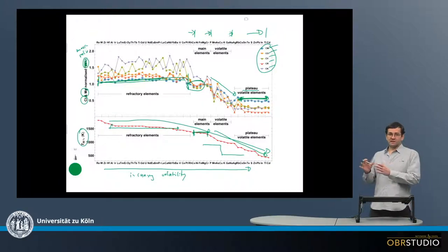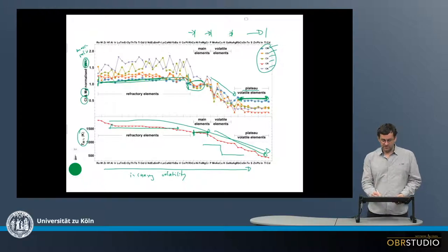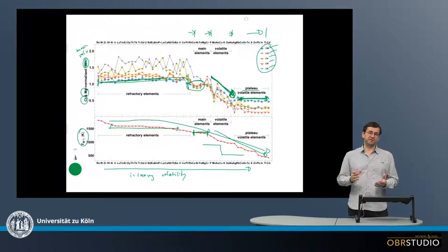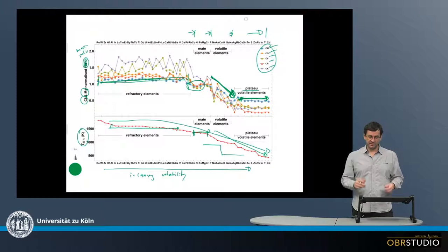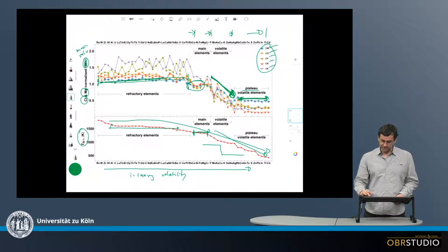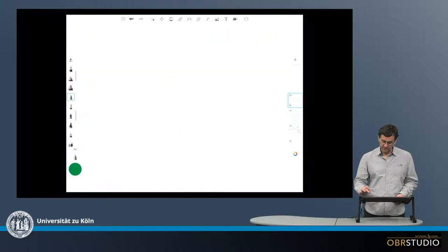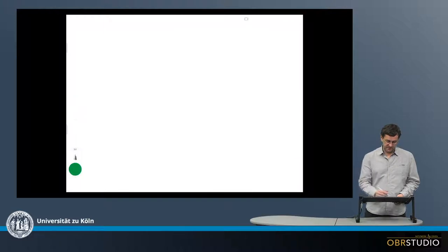Now this volatile element depletion, as it is called, so this general trend downwards here, this volatile element depletion is usually explained by some kind of incomplete condensation or maybe incomplete evaporation. I'd like to quickly illustrate this a little bit.